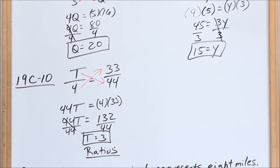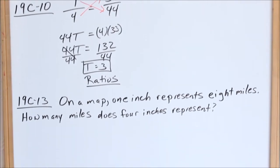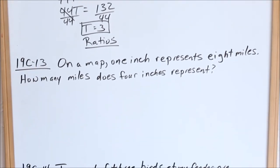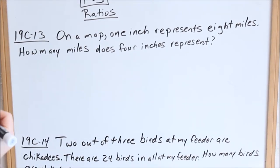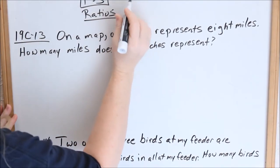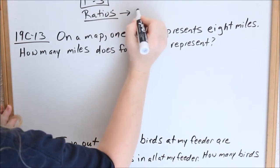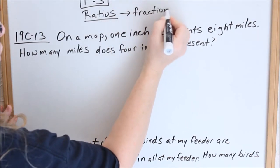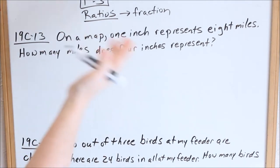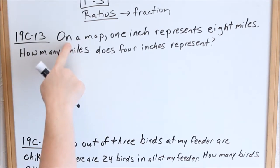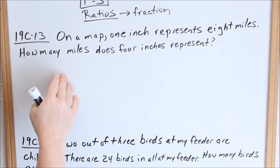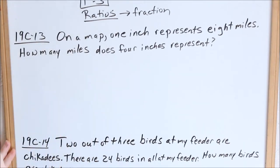Let's look at some of these word problems — 19c13. They're going to talk about ratios. Don't panic when you see the word ratio; ratio is just a fancy word for fraction. When it says make a ratio, you're really just making a fraction. In these word problems, we're going to set one fraction equal to another fraction so we can use cross multiplication to solve.